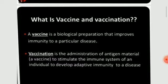What is a vaccine and vaccination? According to WHO, a vaccine is a biological preparation that improves immunity to a particular disease. Vaccination is the administration of antigen material to stimulate the immune system of an individual to develop adaptive immunity to a disease.